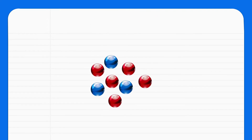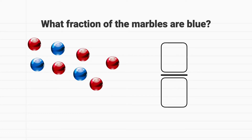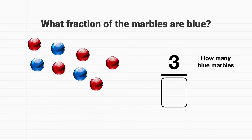But let's say I had this bag of marbles and I dumped it on a table. I want to figure out what fraction of these marbles are blue. Let's remember that there are two parts of a fraction. The numerator tells us how many pieces we have. In this situation, that means how many blue marbles do we have? Well, we can count that we have 1, 2, 3 blue marbles.